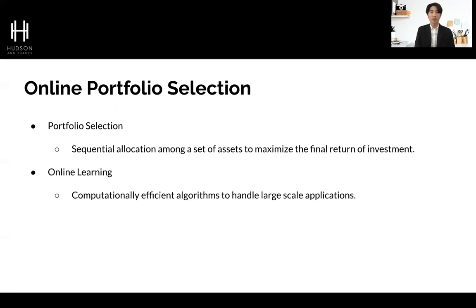It is also noteworthy that traditional theories for portfolio selection, such as Markowitz's portfolio theory, optimize the balance between the portfolio's risk and returns. However, online portfolio selection is founded on the capital growth theory, which solely focuses on maximizing returns of the current portfolio. Because the capital growth theory primarily relies on the Kelly criterion, traditional metrics such as Sharpe ratios and maximum drawdowns are less useful. The primary metric becomes the log of final wealth, which indicates the maximum of final wealth.